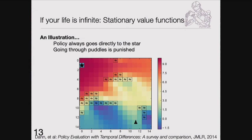The policy gives you a potential field — you can see the value of different states. Here's a good goal state, here's the agent, and here are puddles where you get negative reward. The value function grows as a kind of potential field toward the goal.